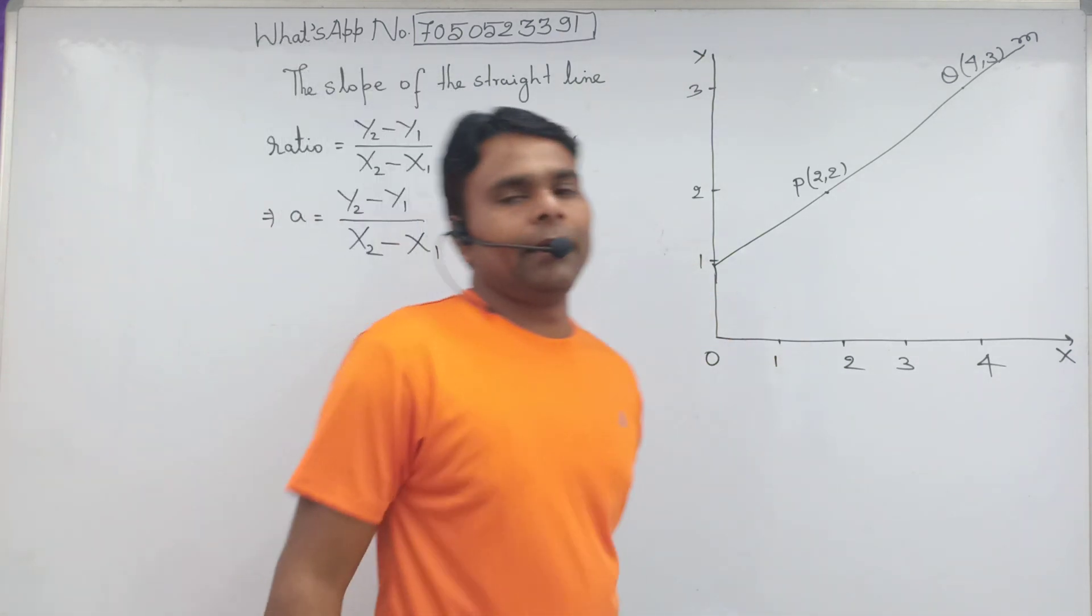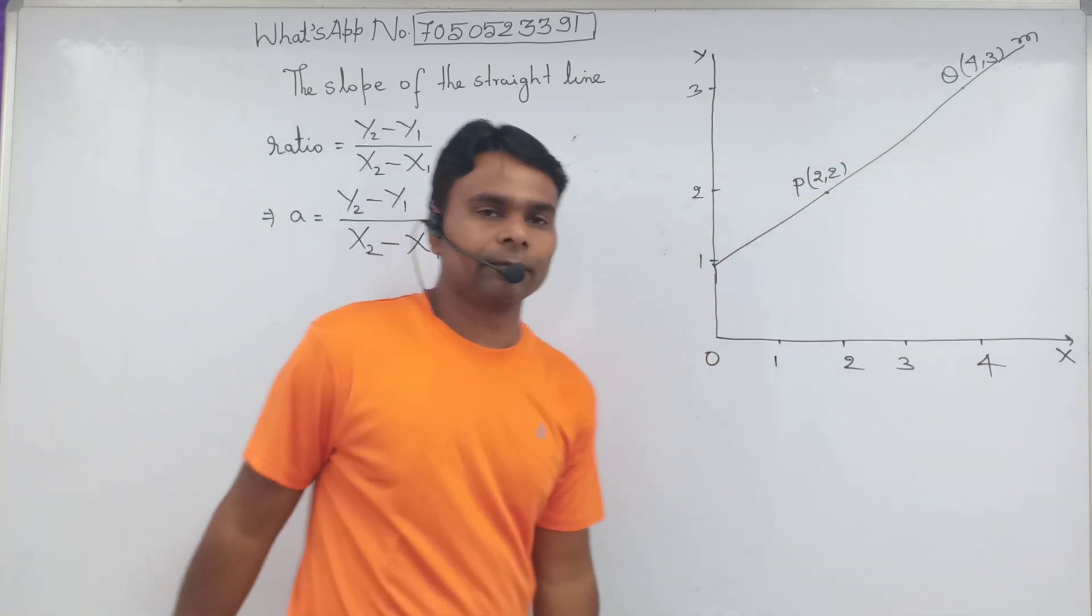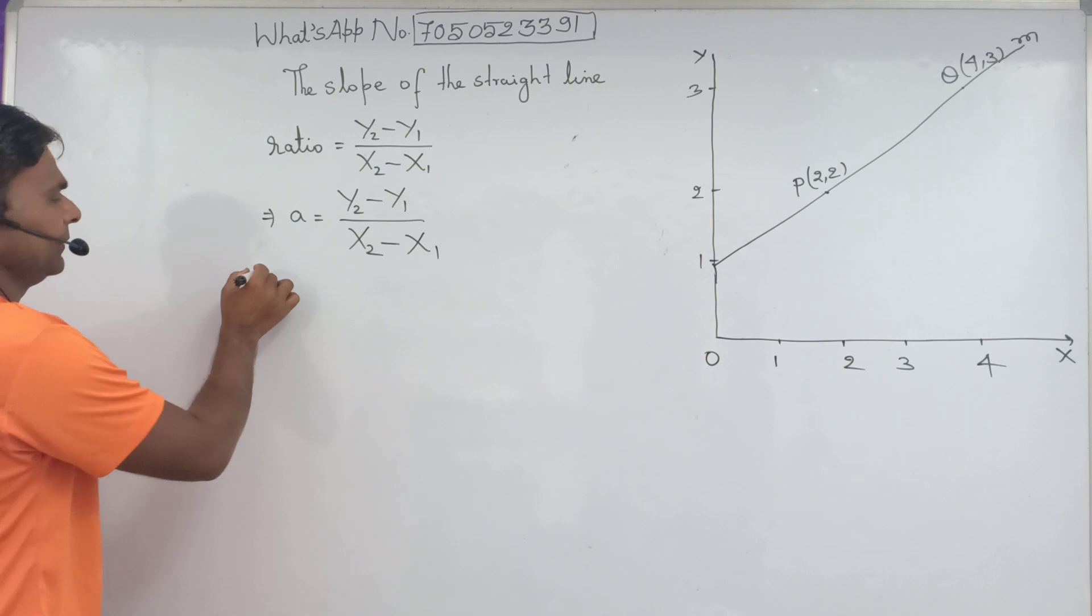Now we have to find the slope of this straight line. Very simple. Coordinate point is given.